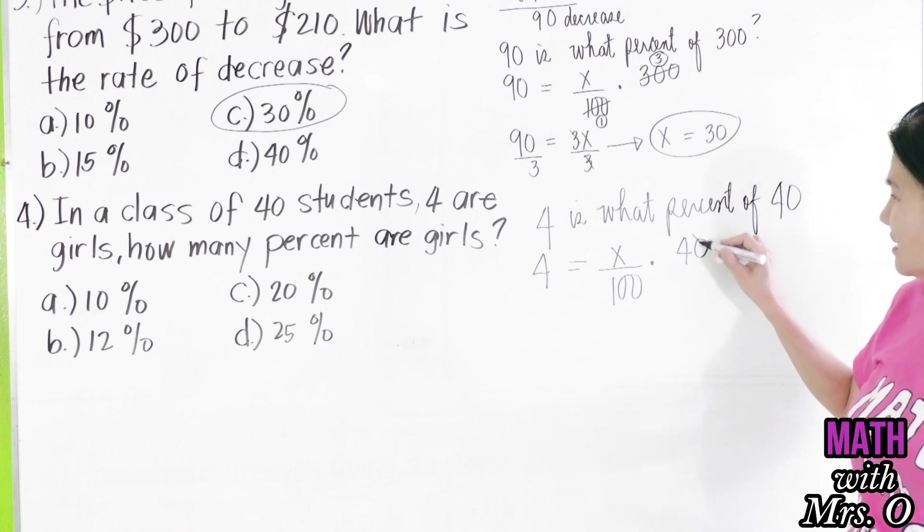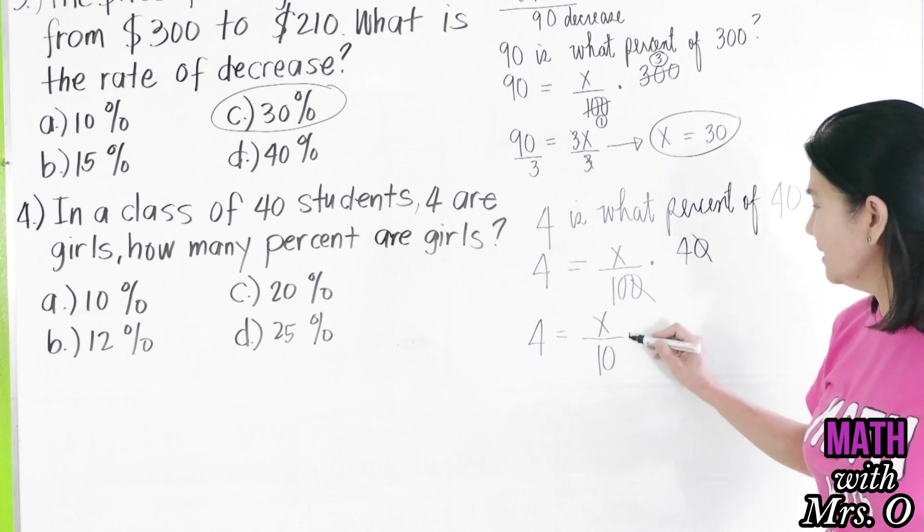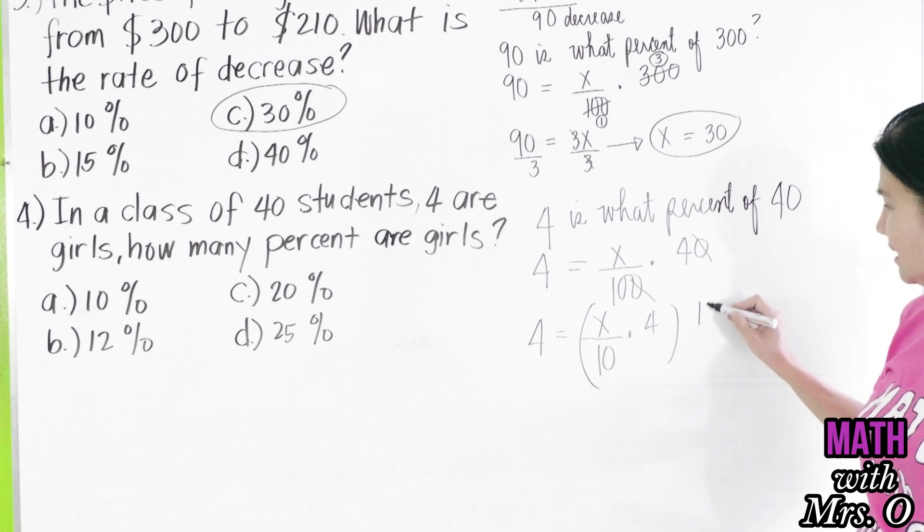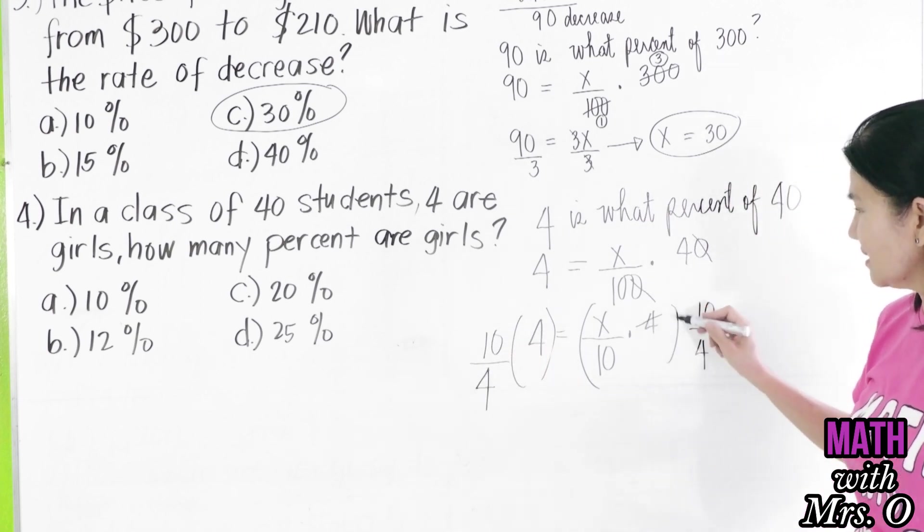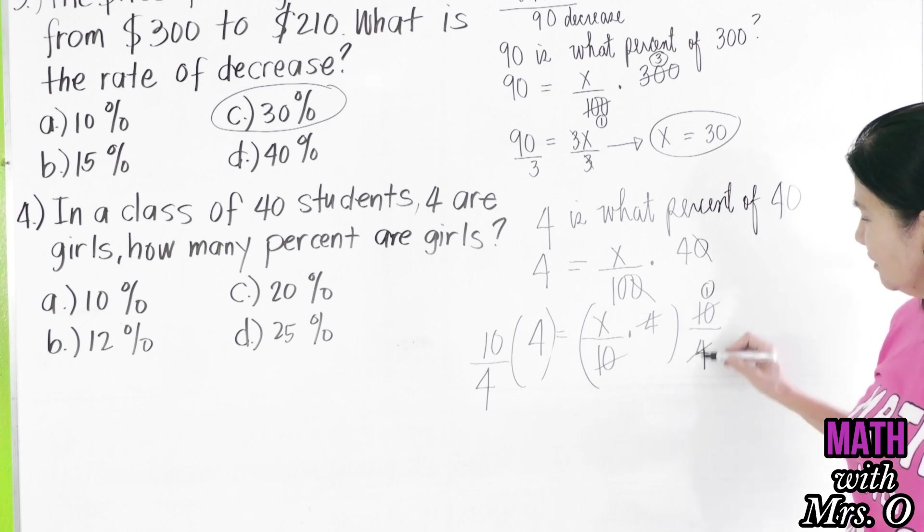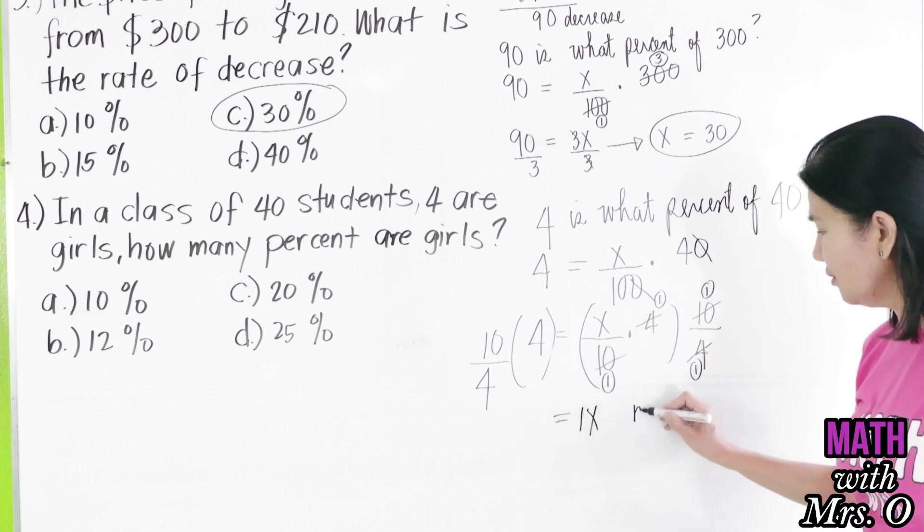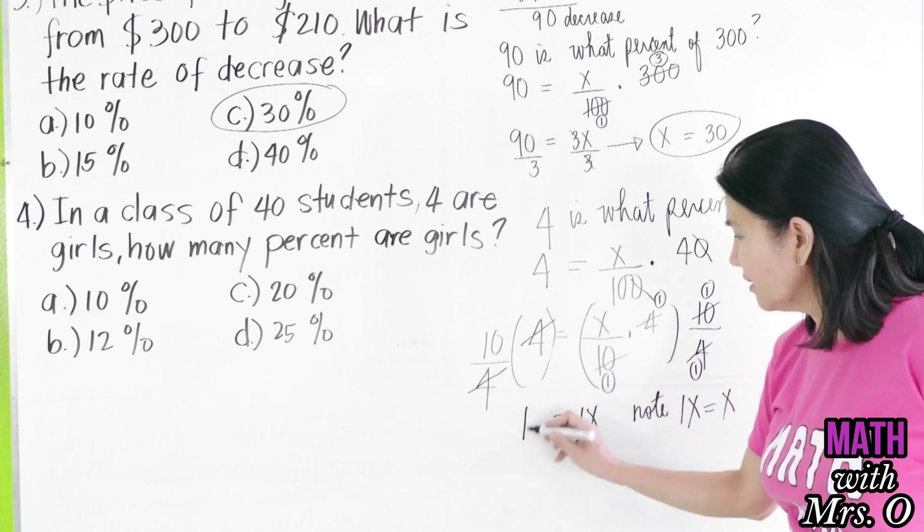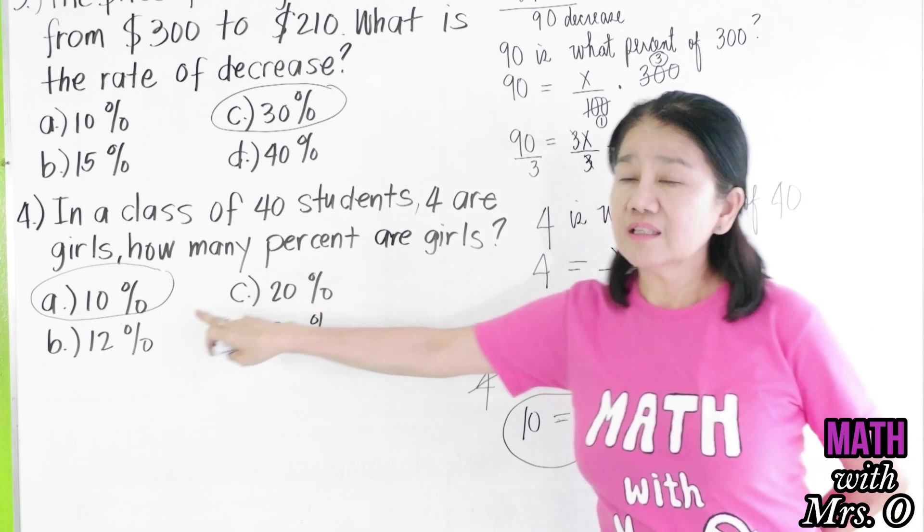So, you can now cancel the zero here and the zero here. You're left with 4 is equal to x over 10 times 4. So, to isolate x here, we can multiply this by 10 over 4, left and right. Why? Because this will cancel with 4. 10 cancels with 10. It means we're getting 1 in all. Times x. That will leave you 1x or x. Take note here that 1x is simply x. So, 4 again cancels with 4. You're left with 10. So, the answer is 10. How many percent are girls? 10% are girls.